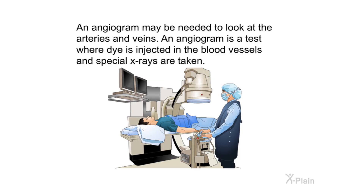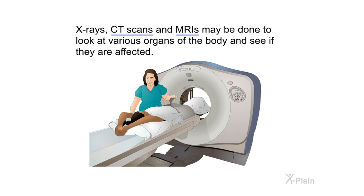An angiogram may be needed to look at the arteries and veins. An angiogram is a test where dye is injected into the blood vessels and special x-rays are taken. X-rays, CT scans, and MRIs may also be done to look at various organs of the body and see if they are affected.